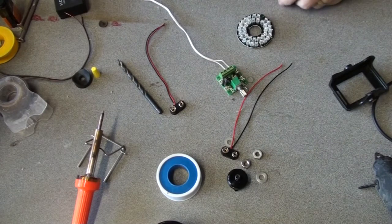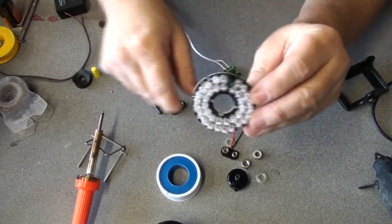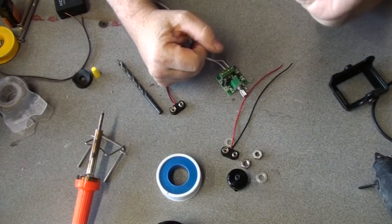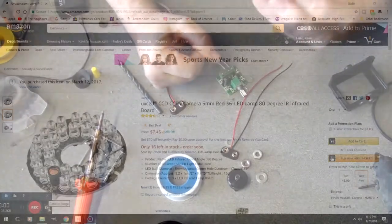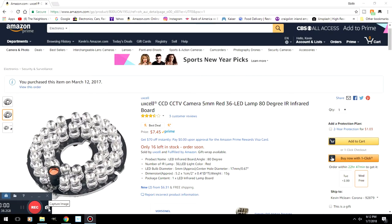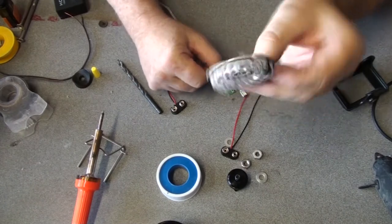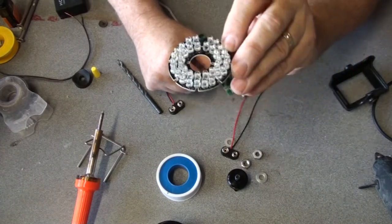You're going to need, this is the most important part. This is a closed circuit TV IR infrared replacement board for a closed circuit television camera. The replacement board only costs $7.45, between $7 and $10 depending on where you buy it.